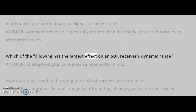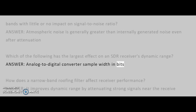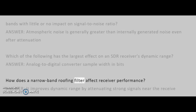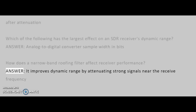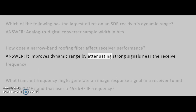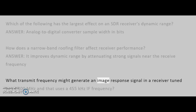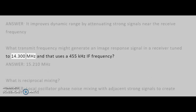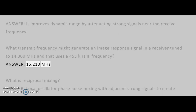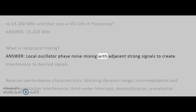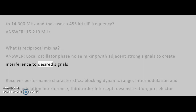Which of the following has the largest effect on an SDR receiver's dynamic range? Answer: Analog-to-digital converter sample width in bits. How does a narrow-band roofing filter affect receiver performance? Answer: It improves dynamic range by attenuating strong signals near the receive frequency. What transmit frequency might generate an image response signal in a receiver tuned to 14.300 MHz and that uses a 455 kHz IF frequency? Answer: 15.210 MHz. What is reciprocal mixing? Answer: Local oscillator phase noise mixing with adjacent strong signals to create interference to desired signals.